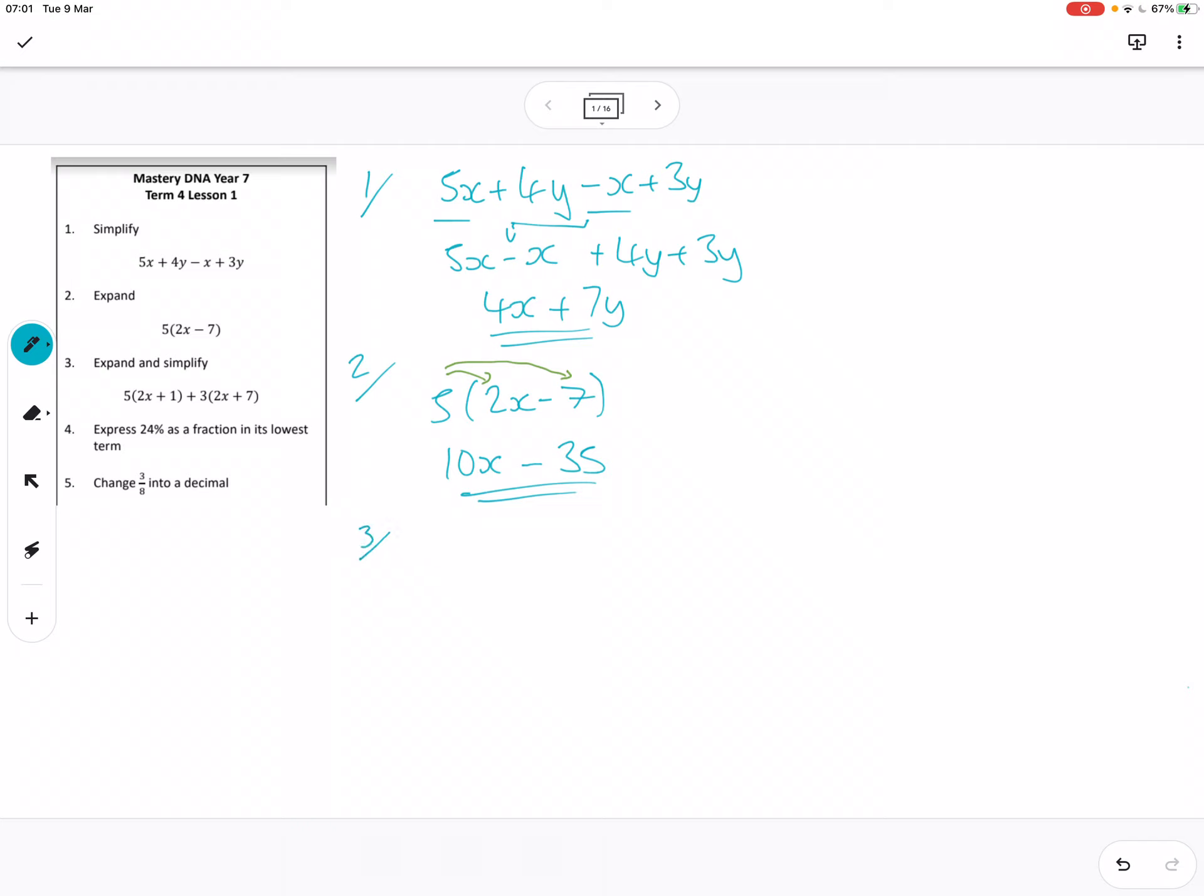Question 3: expand and simplify. So I'm going to write the whole expression out: 1 + 3(2x + 7). Then I'm going to do the same thing, so I'll just do little green arrows here, I'm multiplying out the brackets. So 5 times 2x is 10x, 1 times 5 is 5, plus 3 times 2x is 6x, 3 times 7 is 21. Then the same exercise of gathering the like terms, so 10x plus 6x is 16x, plus 5 plus 21 is 26.